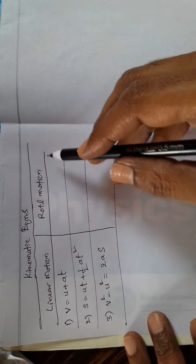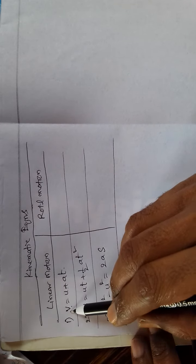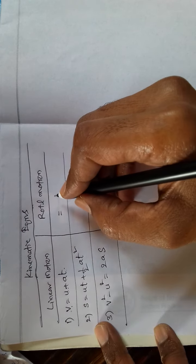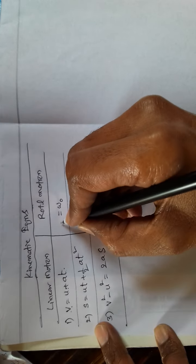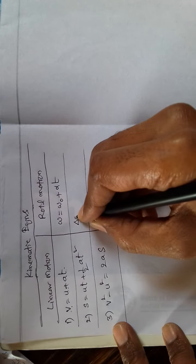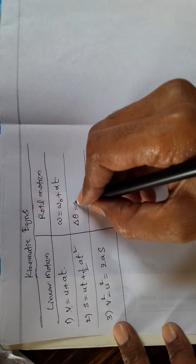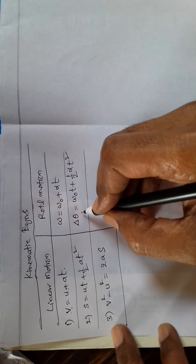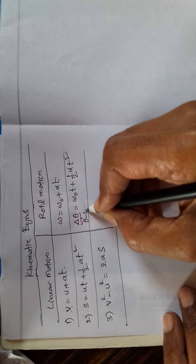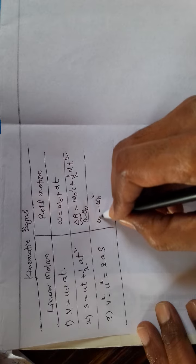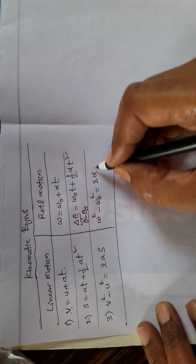The work-energy theorem states work done equals change in kinetic energy. In rotational form: torque times angular displacement equals change in (1/2)I omega². The kinematic equations in linear motion — v equals u plus at, s equals ut plus (1/2)at², and v² minus u² equals 2as — correspond in rotational motion to: omega equals omega₀ plus alpha t, delta-theta equals omega₀ t plus (1/2)alpha t², and omega² minus omega₀² equals 2 alpha theta.